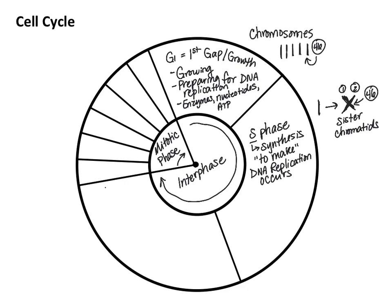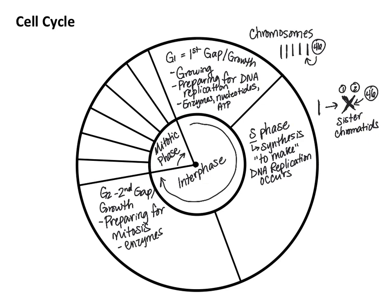During the next phase, we have our G2, which is our second gap — or as I like to call it, the second growth phase. During this phase, the cell is preparing for mitosis. It's going to be making things like enzymes, collecting nutrients to make ATP, and overall preparing for the division of the nucleus and the cell to occur.